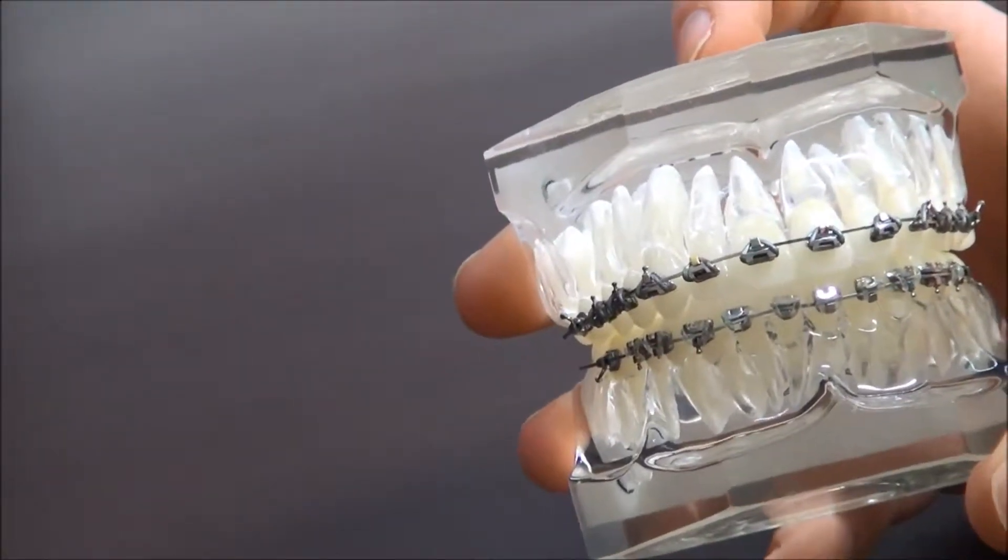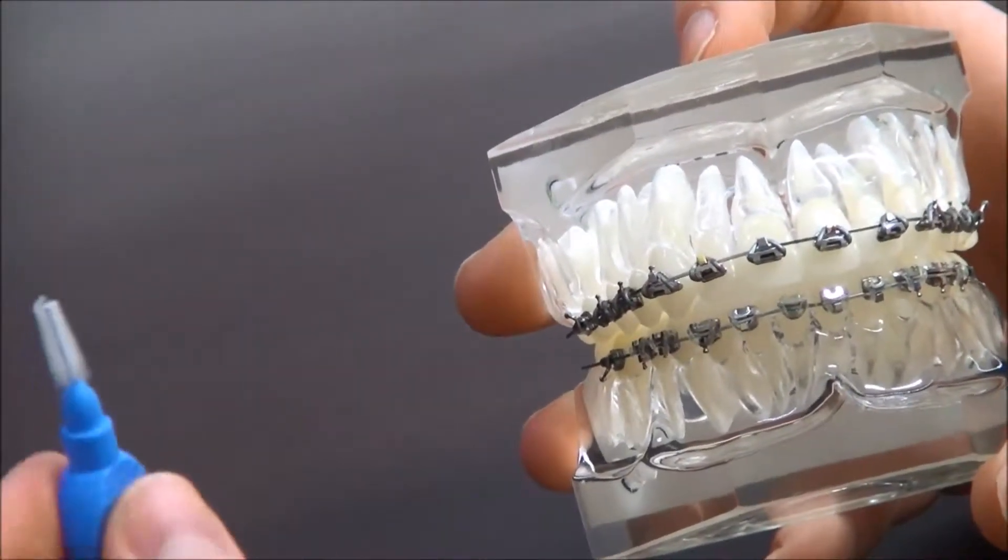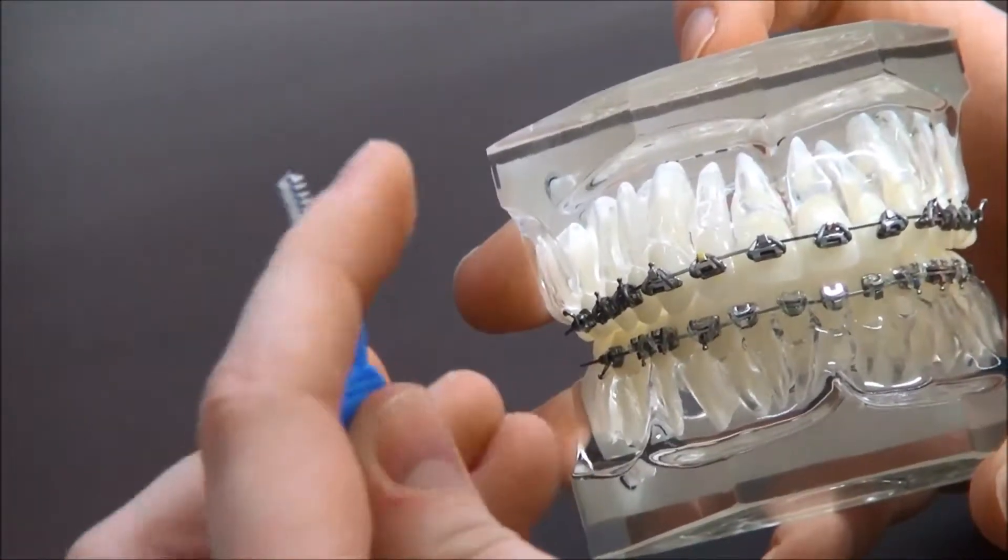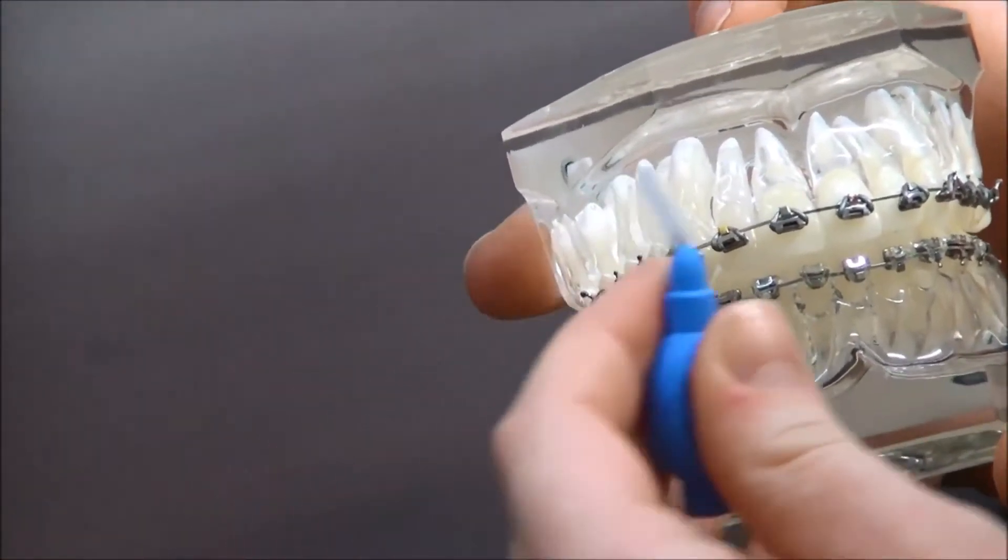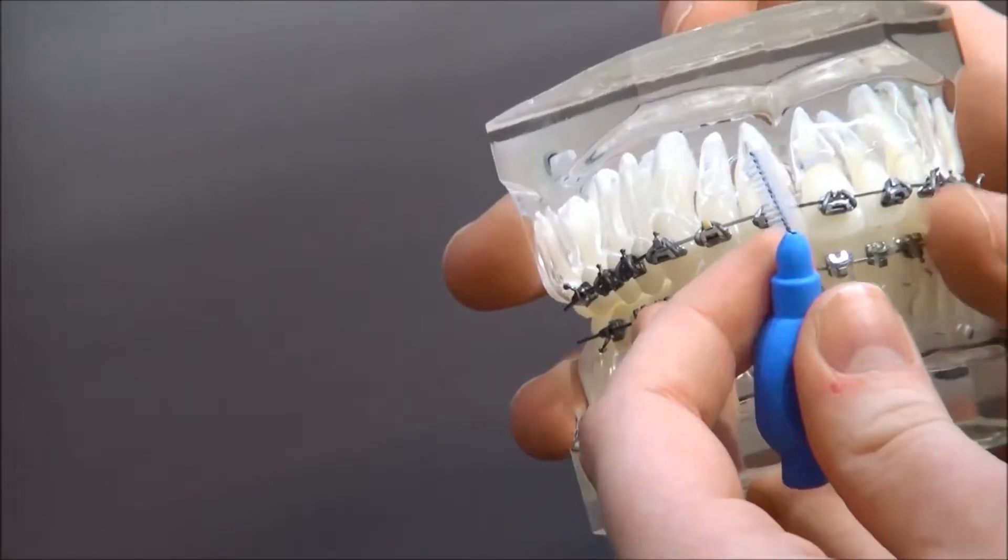Keeping your fast braces clean. The first thing you're going to be using is an interdental brush. You should be using this after every time you eat and before you floss and brush your teeth.